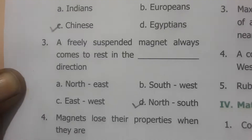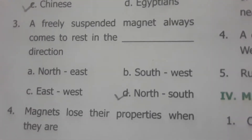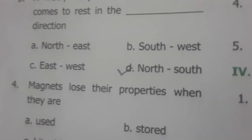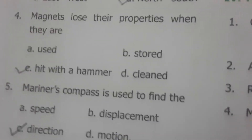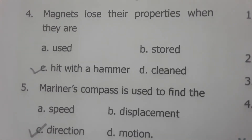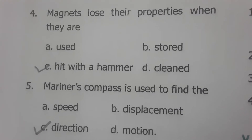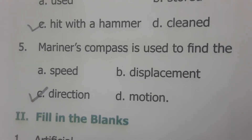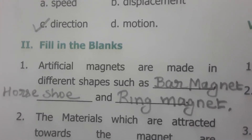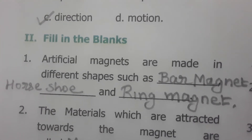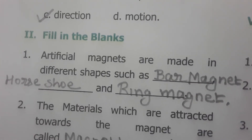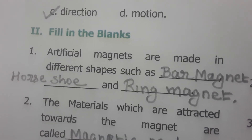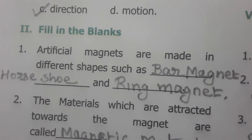A freely suspended magnet always comes to rest in the north and south direction. Magnets lose their properties when hit with a hammer. A mariner's compass is used to find direction. For fill in the blanks: artificial magnets are made in different shapes such as bar magnet, horseshoe magnet, and ring magnet.